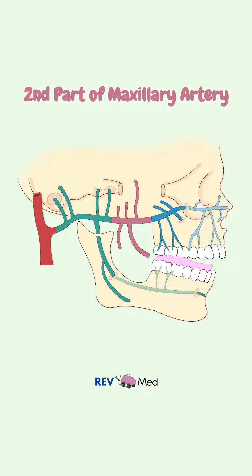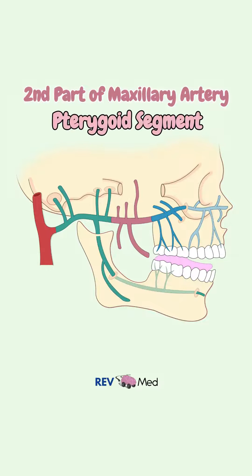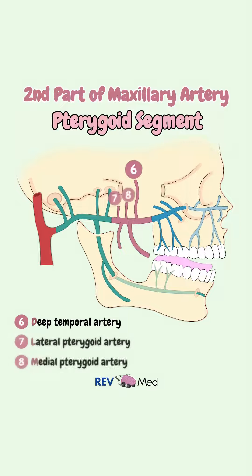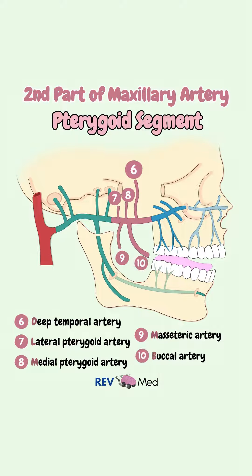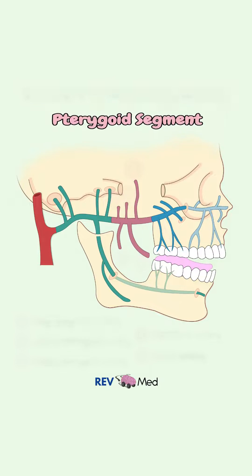Part two is pterygoid, which is also five branches. The deep temporal artery, supplying the temporalis muscle. The pterygoid artery, for the lateral and medial pterygoids. The masseteric artery, for the masseter. And the buccal artery, for the buccinator.